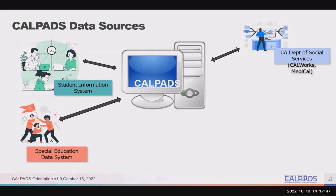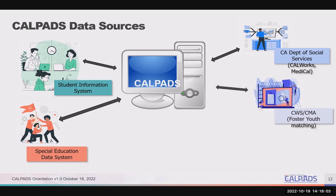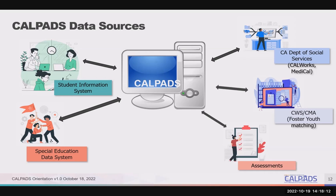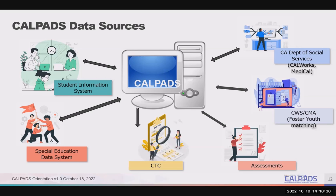For example, enrollment and demographic data are extracted from CALPADS and matched statewide with the California Department of Social Services — CalFresh, CalWorks, and the Medi-Cal systems — to directly certify students as eligible for free and reduced price meals. There is a statewide matching with the child welfare system and case management system to identify foster youth. There is a data exchange with the Testing Operations Management System, TOMS, so students can be digitally assessed and ELPAC test status results returned back to CALPADS. More recently, course and certificated staff data from CALPADS is matched with the California Commission on Teacher Credentialing to identify potential misassignments following the Fall 2 submission.